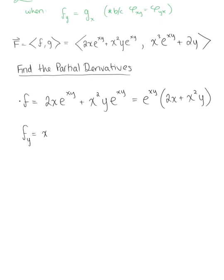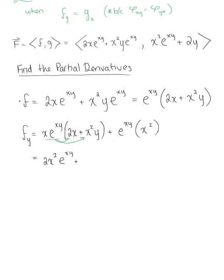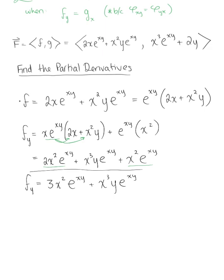Applying the product rule gives us x times the natural exponential raised to the xy, multiplied by 2x plus x squared y, plus the natural exponential raised to the xy multiplied by x squared. Simplifying by redistributing the natural exponential to both terms, we end up with 2x squared times e to the xy, plus x cubed y times e to the xy, plus x squared times e to the xy. This is the partial derivative of f with respect to y.